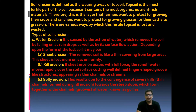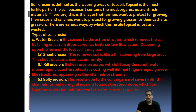Therefore, farmers want to protect the top soil for growing their crops, and ranchers want to protect it for growing grasses for their cattle to graze on. There are various ways by which the top soil can be protected or lost. The degradation or wearing away of the top soil is known as soil erosion.